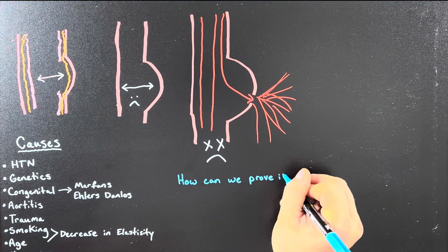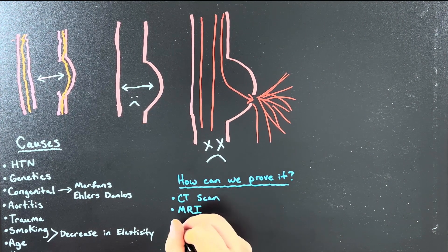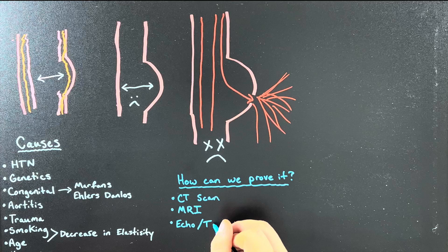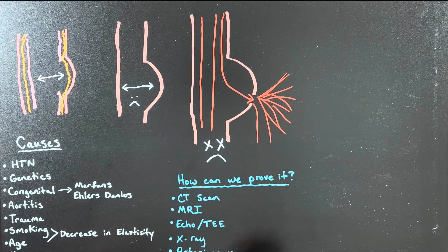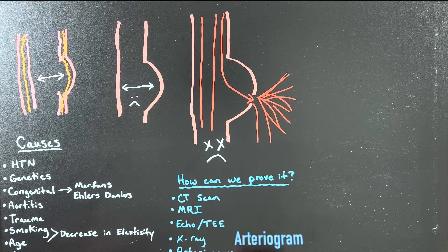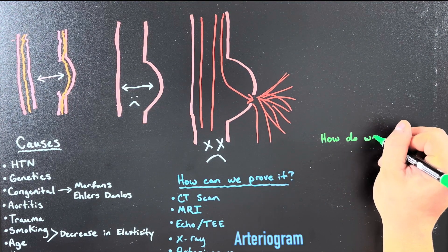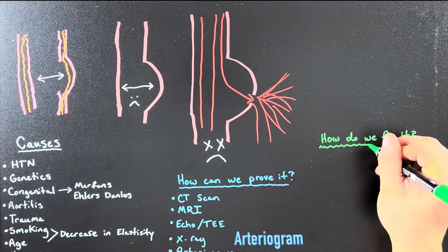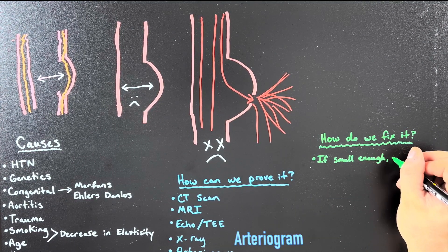We know what causes it, but how do we prove that's what's going on? CT scans and MRIs are both high-resolution imaging that can show us. Echos and TEEs are really good for upper thoracics and aortic arches but not so much for abdominals since they're only looking up top. X-ray and arteriogram — where they inject dye and can see where something has bulged — are also used.